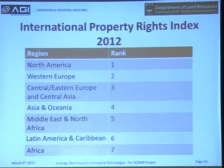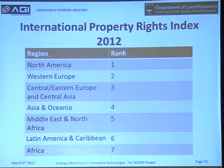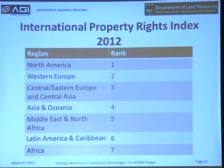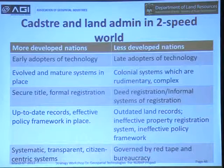The 2012 rankings of the International Property Rights Index present this kind of scenario: the more developed regions — North America, Western Europe, Central and Eastern Europe, and Central Asia — rank one, two, and three. Asia and Oceania ranks four, and the Middle East and North Africa, Latin America and Caribbean, and Africa form the lower chunk of the rating.